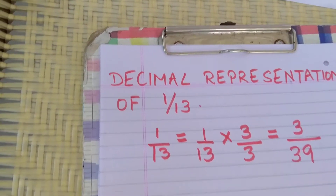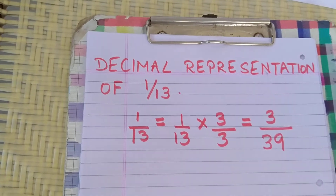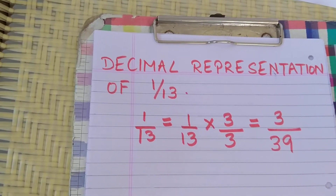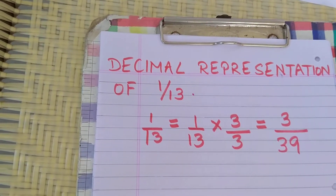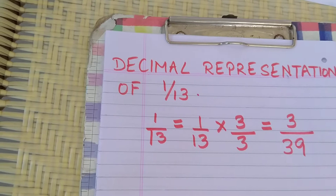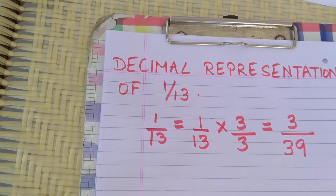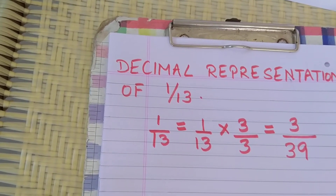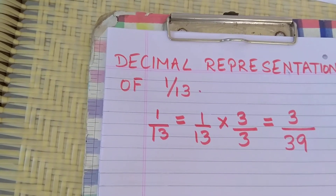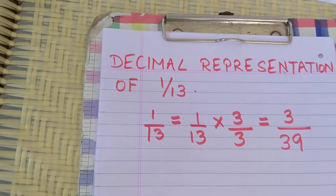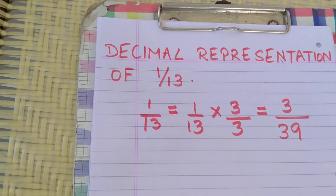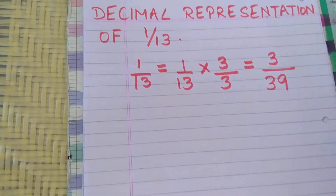Now 3 by 39 will be converted to decimals in the same way as we converted 1 by 19 to decimals. If you have joined my channel for the first time, the link to convert 1 by 19 to decimals is given in the description box.